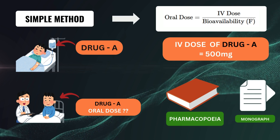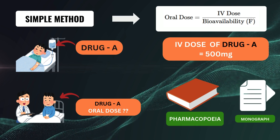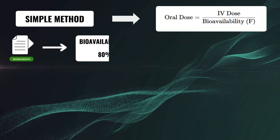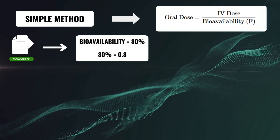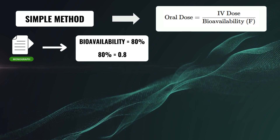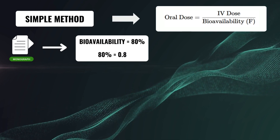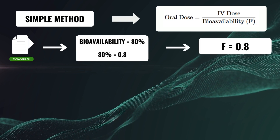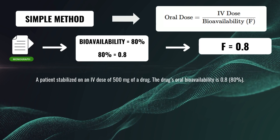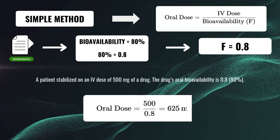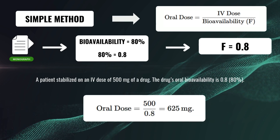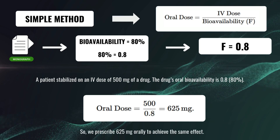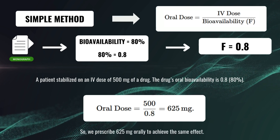We note down the bioavailability and apply it to the formula. Suppose the monograph shows the bioavailability of the drug is 80% — hence F equals 0.8. If it's 70%, then F is 0.7. Here F is 0.8 and the IV dose is 500 mg. By applying them to the formula, we get 625 mg. So we can prescribe 625 mg of oral medication to achieve the same therapeutic effect.